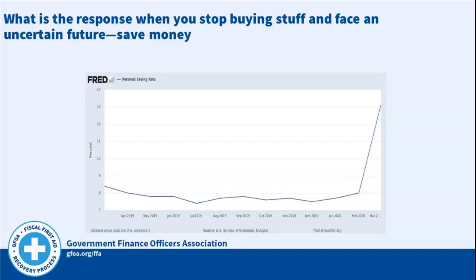This shows what happens when you have an uncertain future. From February to March, Americans started saving at an extraordinary level — the personal savings rate went above 13%, which is extraordinarily high by any historical standard. People stopped buying stuff, we saw a decline in retail sales, and they started saving because they're fearful about what the future is going to look like.